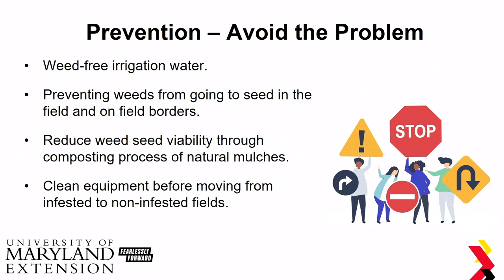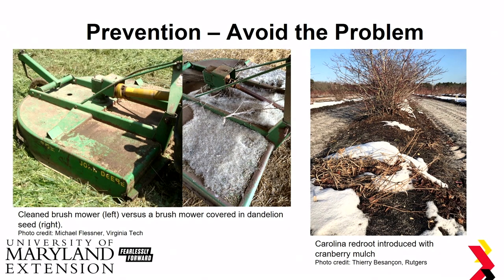Also, clean equipment before moving into infested fields. Here we see a clean brush mower versus a brush mower covered in dandelion. There's also a picture of Carolina redroot introduced into cranberry mulch. In New Jersey, cranberry mulch is used in blueberries, but Carolina redroot has been a persistent problem when that mulch isn't properly composted — and that's what you get: an additional weed in your blueberries.